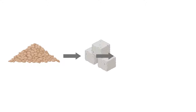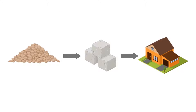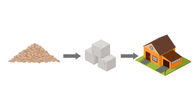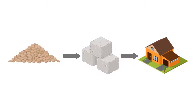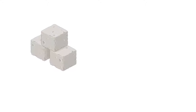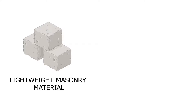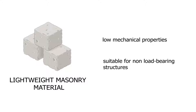However, despite all the potentially good effects, lightweight aggregates have also been shown to greatly reduce the strength of mortar or concrete mix. This in turn affects the strength and durability of the structure, as it depends on the masonry mortar for tensile, bending, and compressive strength. Though lightweight masonry materials have superior properties in some regards, their low mechanical properties make them suitable for use only in non-load bearing members.